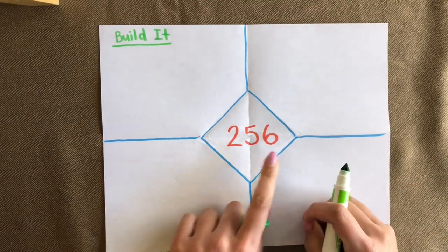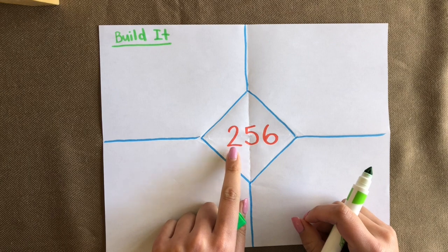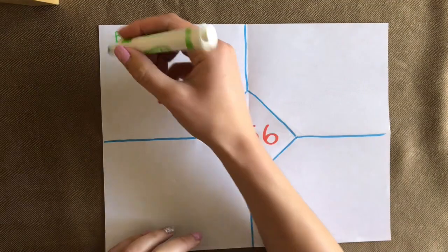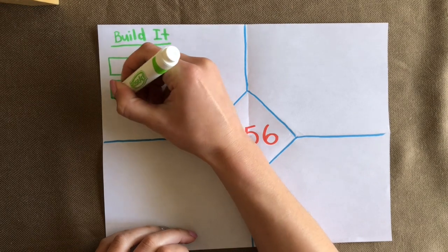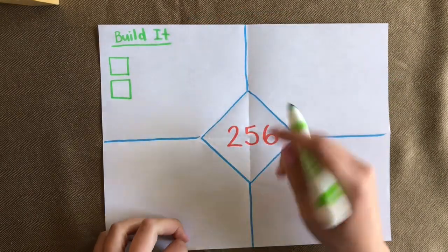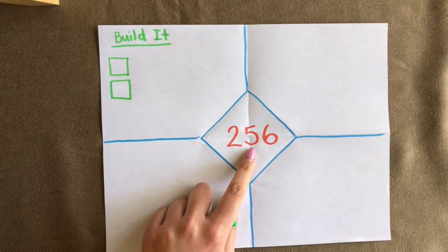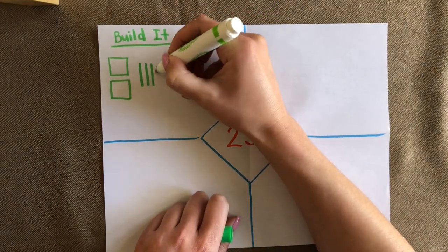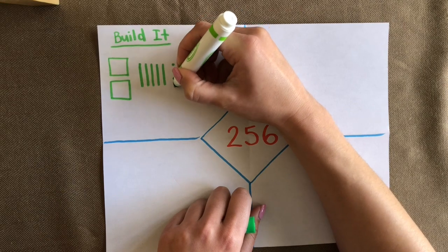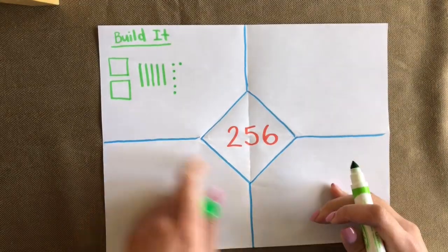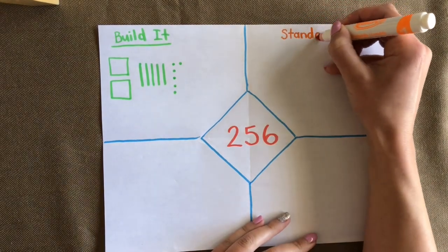We have a ones digit of six, a tens digit of five, and a hundreds digit of two. To show hundreds I'll draw a square — like the flat square base 10 block. Here's 100 and here's another 100; together they show 200. Now I'll show my five tens with lines, like tally marks: one, two, three, four, five. And lastly six ones represented with dots: one, two, three, four, five, six. Here is 256.